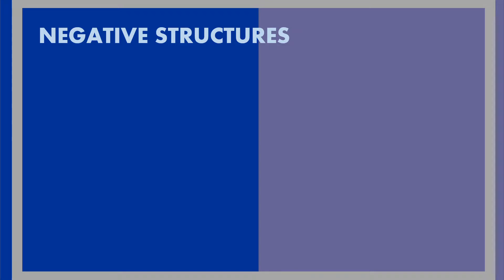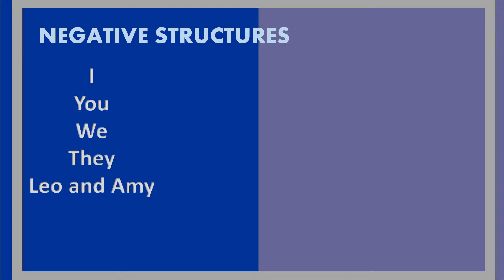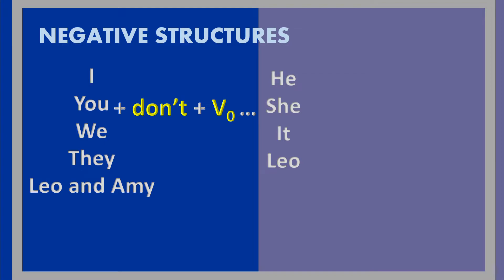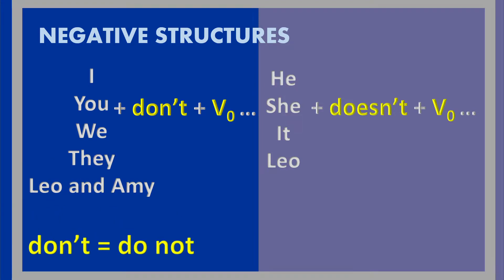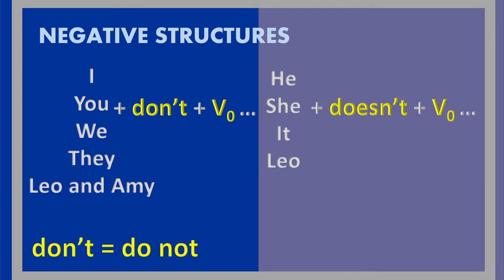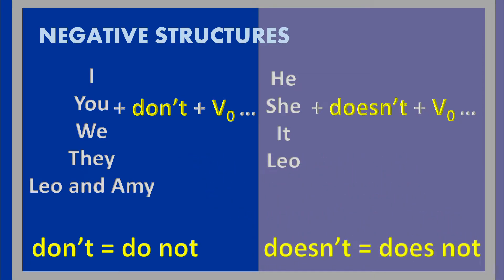Let's have a look at the negative structures. The subject I, you, we, they, Leo and Amy plus don't plus verb. For third person singular like he, she, it, Leo, plus doesn't plus verb. Remember, don't is the short form of do not, and doesn't is the short form of does not.